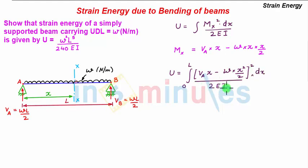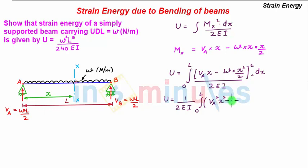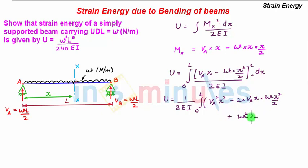Taking the constant terms out and expanding the squared term, strain energy U = (1/2EI) · ∫₀ᴸ [VA²x² − 2·VAx·(Wx²/2) + W²x⁴/4] dx. We notice that the factor of 2 in the middle term cancels.